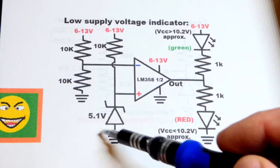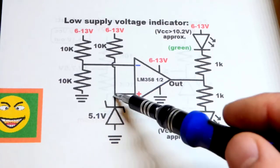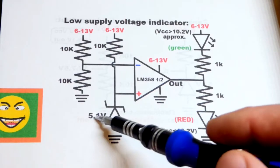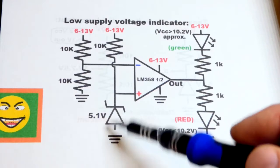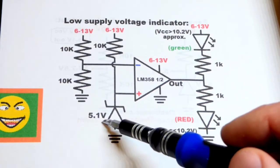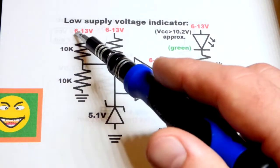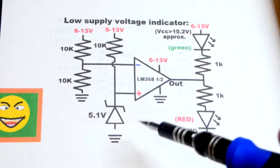Since the zener diode is reverse biased, it's going to build up 5.1 volts as long as current is flowing through it. That will vary a little bit based on current, but it's going to be really close to 5.1 volts as long as we keep the power supply about six volts or higher.